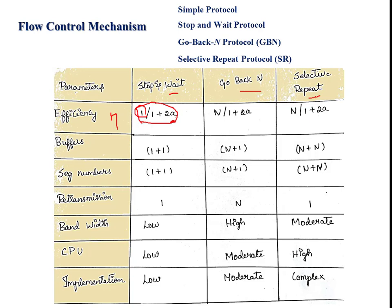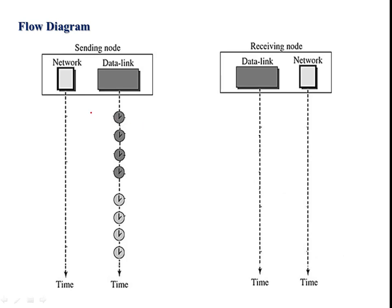Whereas in go-back-N and selective repeat protocols, we use the sliding window concept — that is, pipelining — so a number of packets can be transmitted in a given time. Looking at the flow diagram, in stop-and-wait the window size is actually one, but in go-back-N and selective repeat the window size of the sender is actually greater than one.